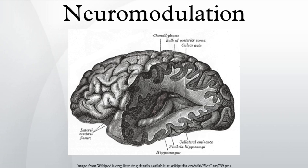The major neurotransmitter systems are the noradrenaline system, the dopamine system, the serotonin system and the cholinergic system. Drugs targeting the neurotransmitter of such systems affect the whole system, and explains the mode of action of many drugs. Most other neurotransmitters, on the other hand, for example glutamate, GABA and glycine, are used very generally throughout the central nervous system.